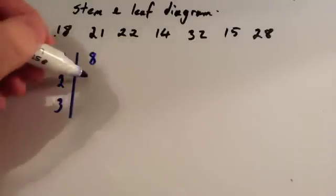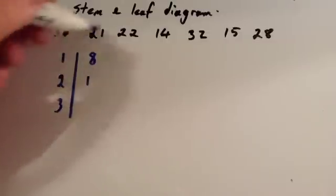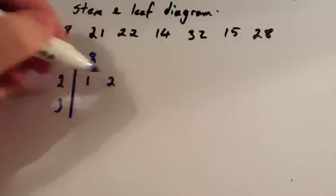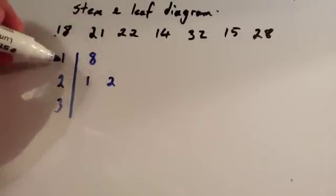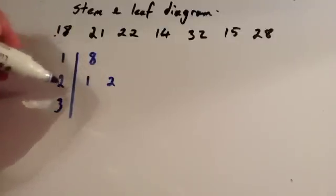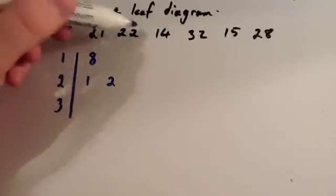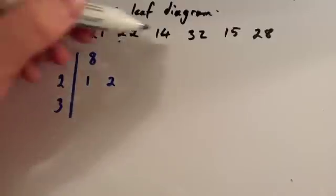We've got 21, so we're going to put 1 in the 20s row. We've got 22, so we're going to put a 2 in the 20s row. So, if you just check, you've got 18, 21, 22. The next number is 14.